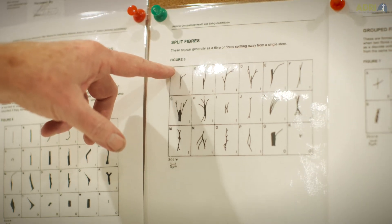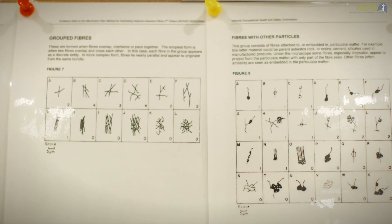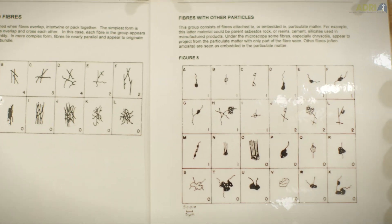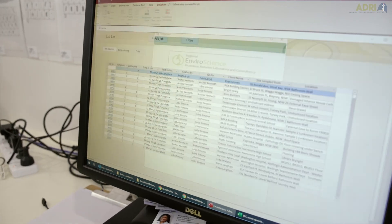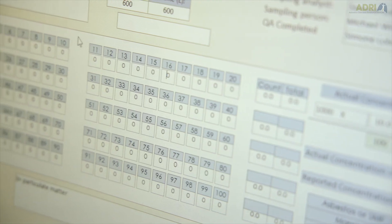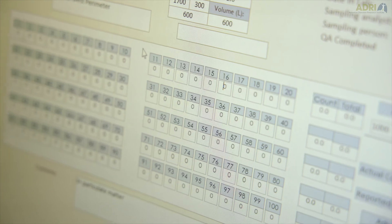A fibre to be respirable that's small enough to get into our human lungs is less than 3 microns in its width and greater than 5 microns in its length. Once that's done we then enter those results into our laboratory database and generate a report for our client.